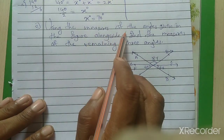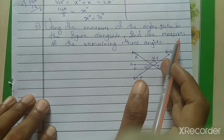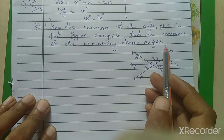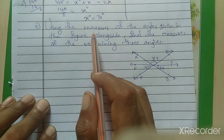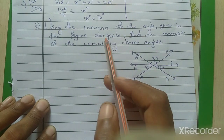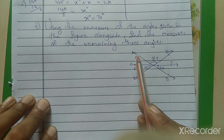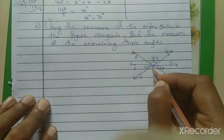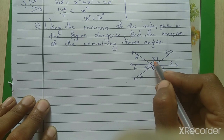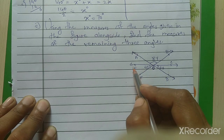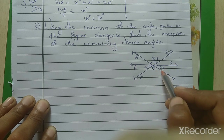Question 2: Using the measures of the angles given in the figure, find the measures of the remaining three angles. The given angles are: angle AOB equals 8Y, angle FOE equals 4Y, and angle COD equals 6Y. We have to find the remaining three angles.